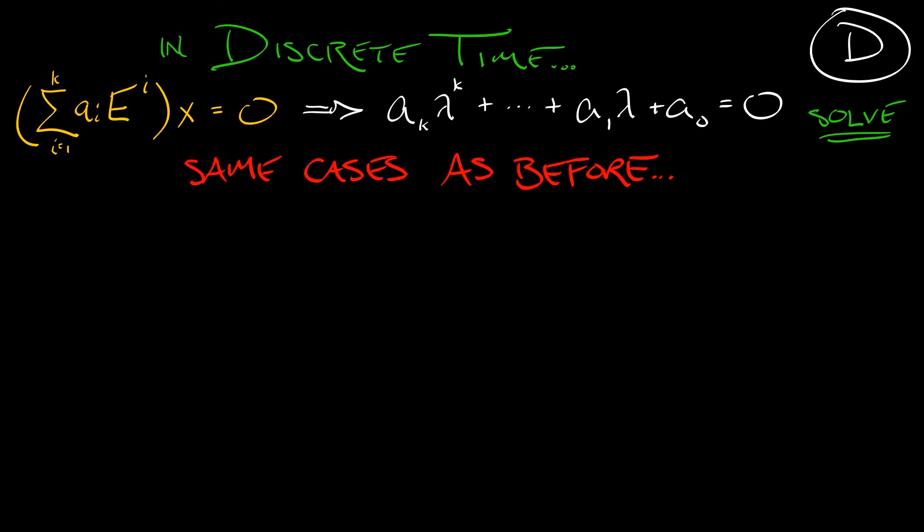Basically, this splits up into real and complex. Let's say that we have a real root, lambda, that has multiplicity j, then the first basis solution, the basis solution, if it's a simple eigenvalue, is lambda to the n. That's it. That's the same thing that we saw in 2d discrete time.